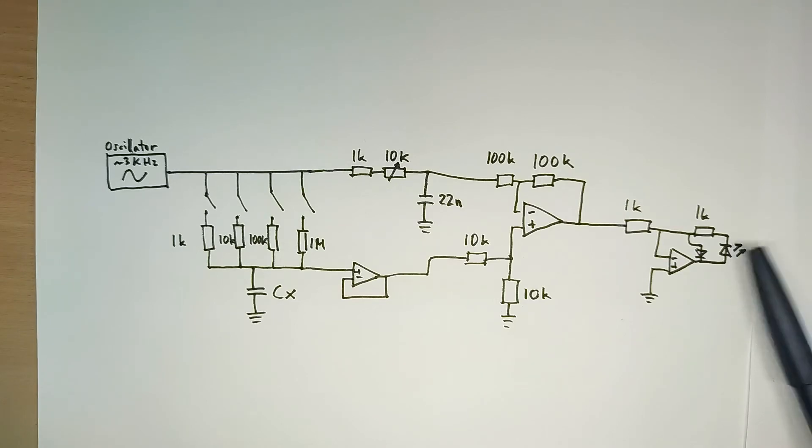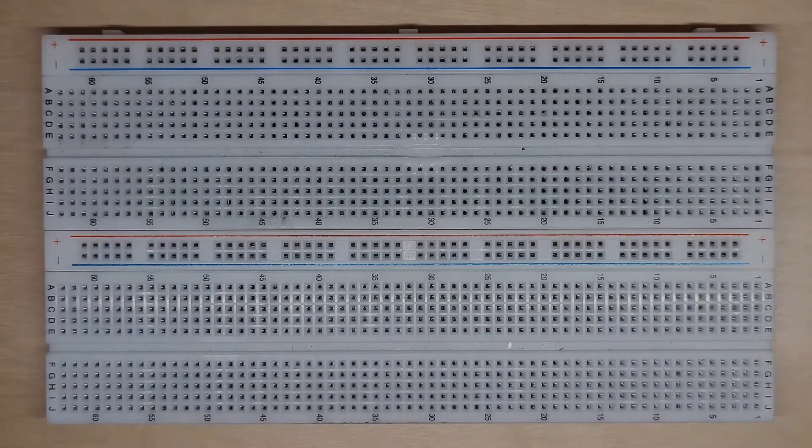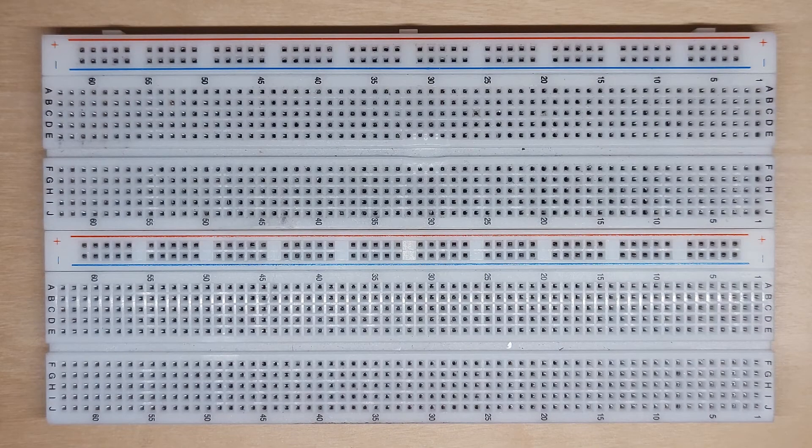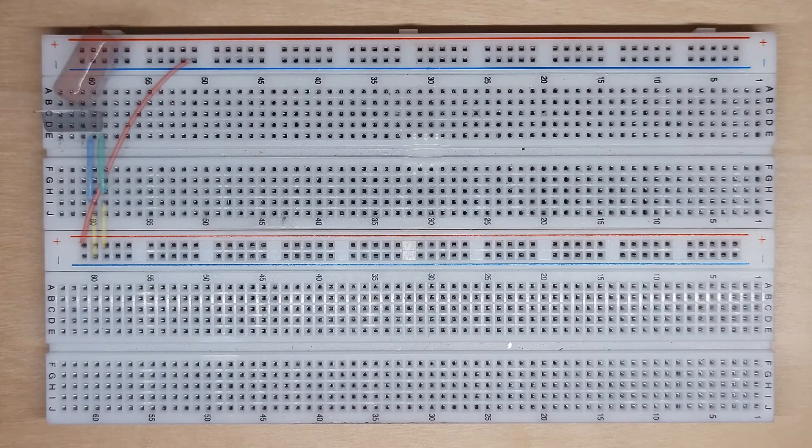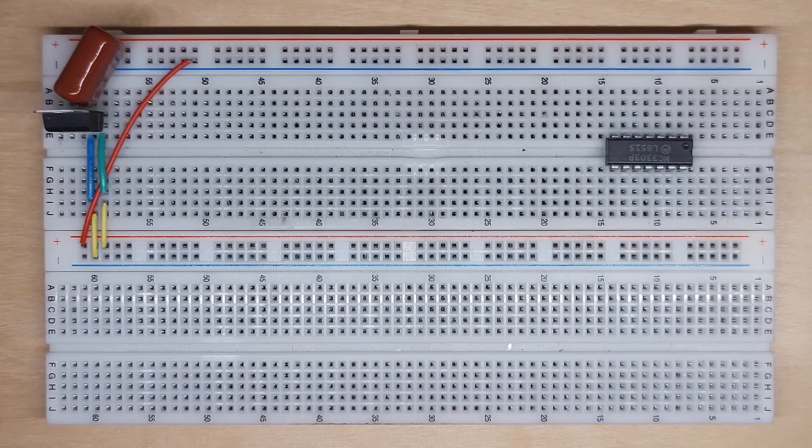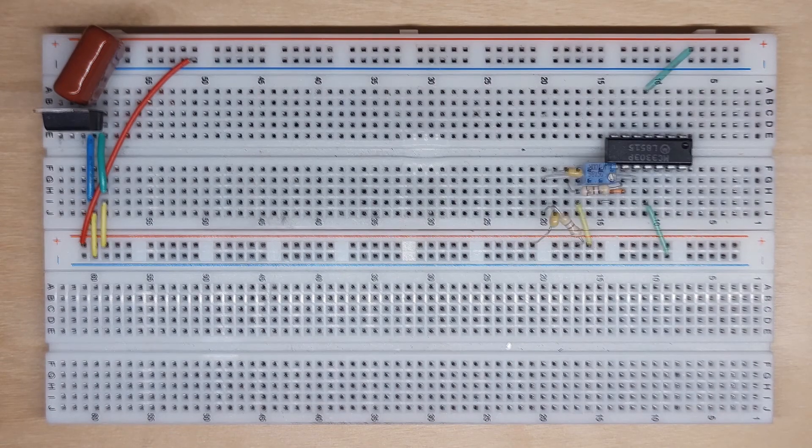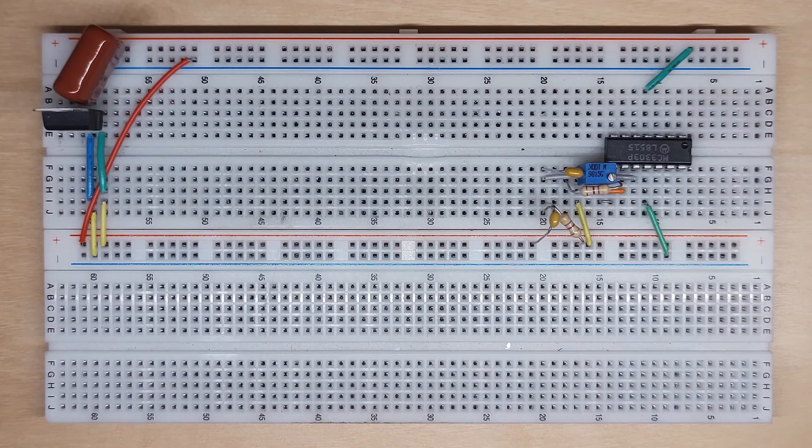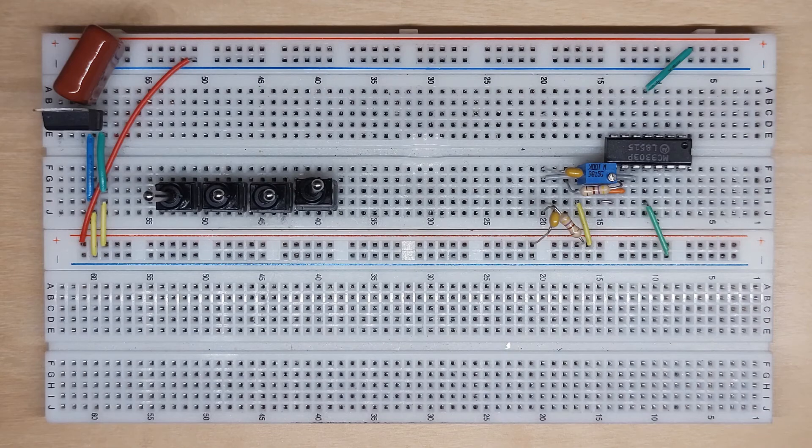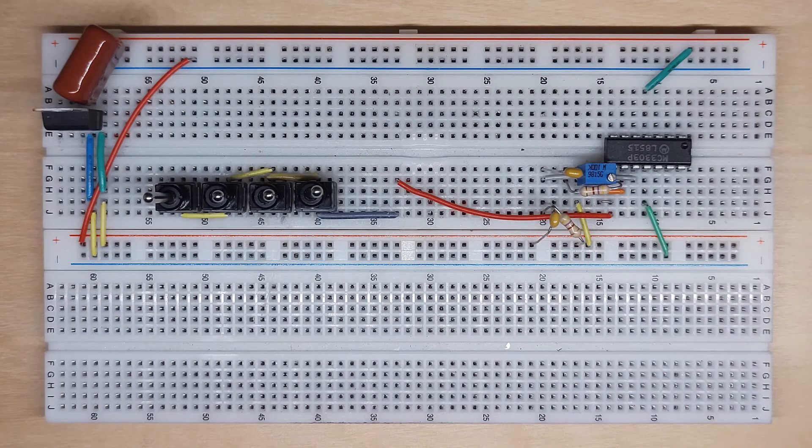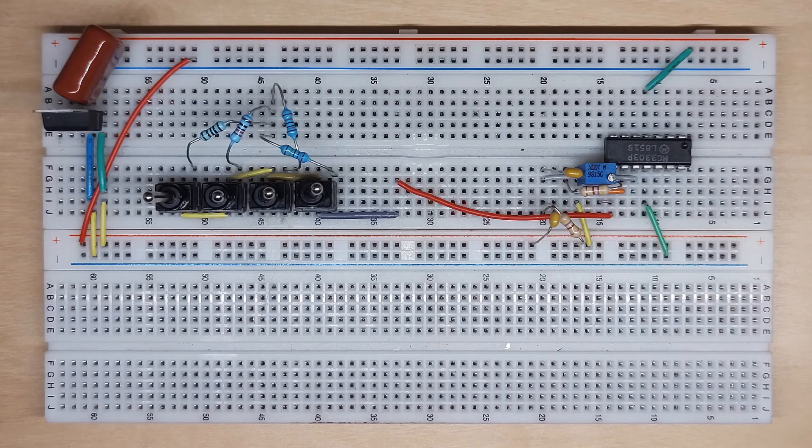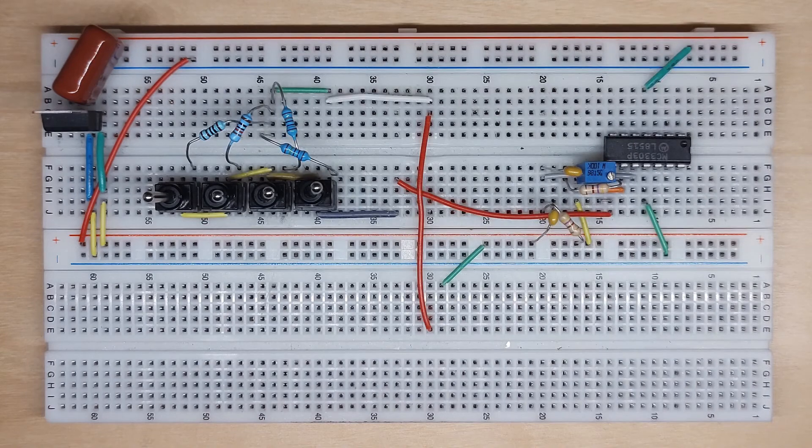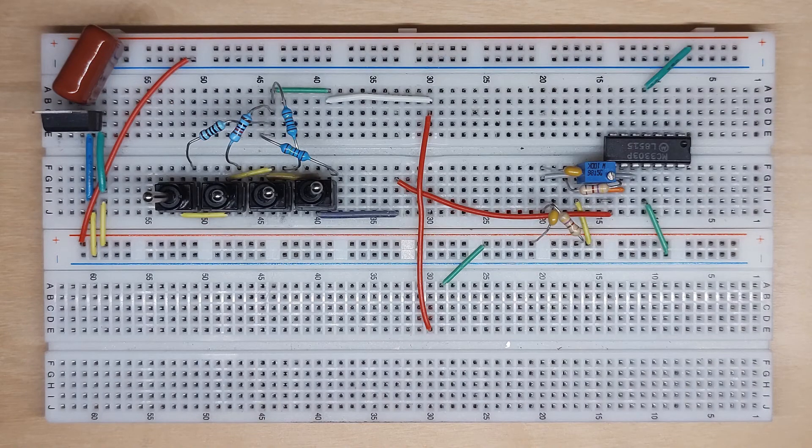Alright, so let's build this thing. First thing we do is build our dual power supply, then we can insert the quad op amp and build the oscillator. Next thing we do is insert the four switches, then we can connect them up to the waveform outputted by the oscillator.